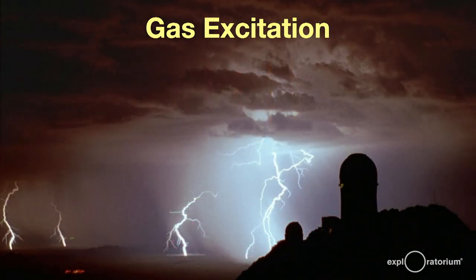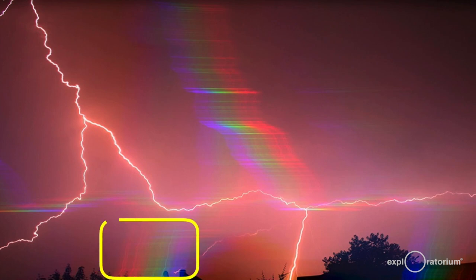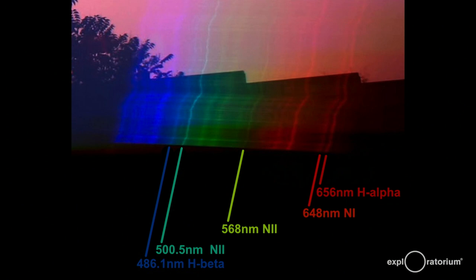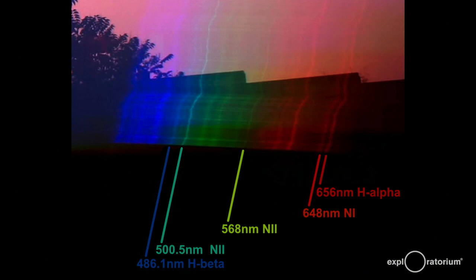Like my gas discharge tubes, lightning produces gas excitation. This photo is from Kitt Peak Observatory near Tucson, Arizona. If you take a photo of lightning with diffraction grating glasses over the lens, you'll get the spectrum of the gases in the lightning stroke. Here you see the colors produced by gases in the atmosphere: nitrogen, which is close to 80 percent of our air, and hydrogen. Hydrogen gas is not part of our atmosphere, but the lightning is so energetic that it rips apart water molecules — H₂O — into its component gases, hydrogen and oxygen. Only a few of the spectral lines are labeled here.